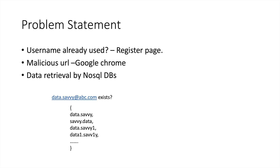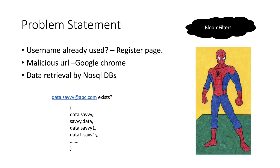Bloom filter is also used by a lot of NoSQL databases like Cassandra and HBase to find out if a record exists in a node or not. All these systems need a data structure which is very space-efficient and which can very quickly tell them whether a record already exists or not. That's why bloom filter is used — it is the super data structure we are going to discuss.